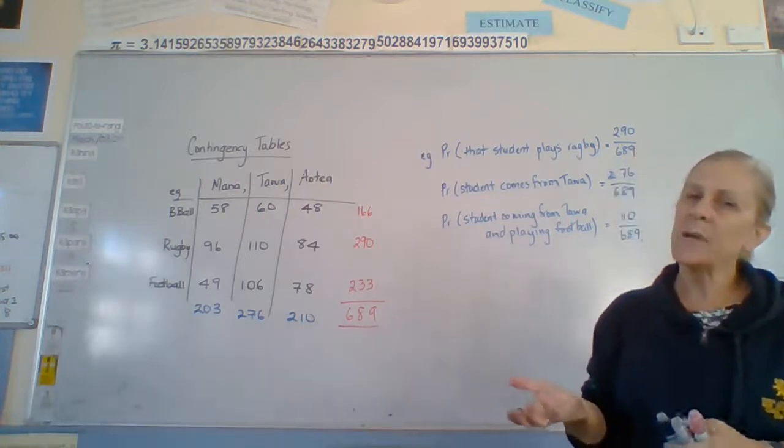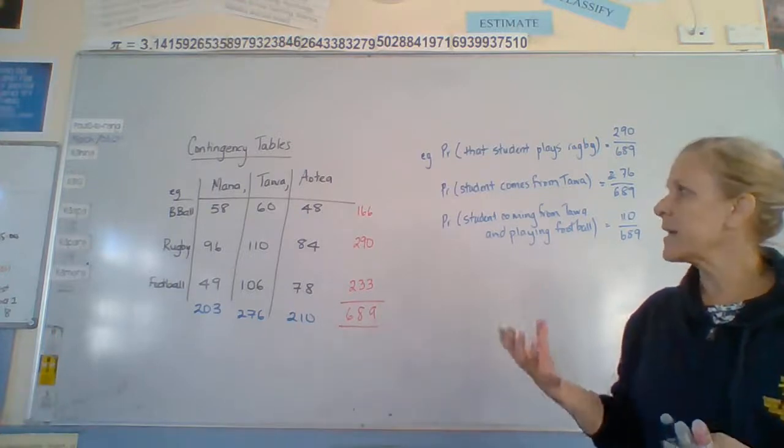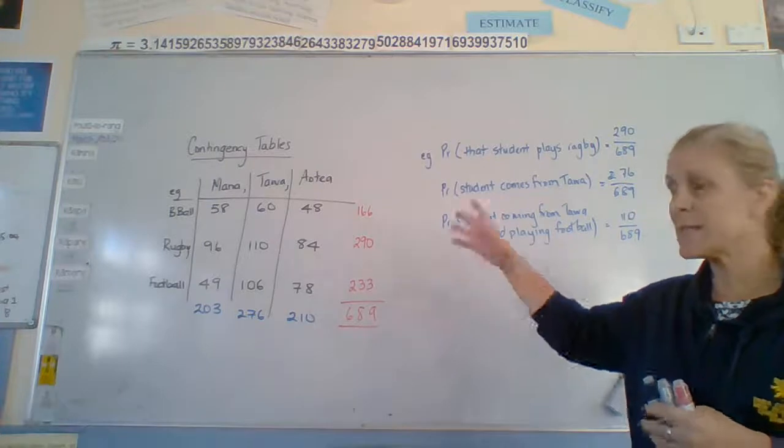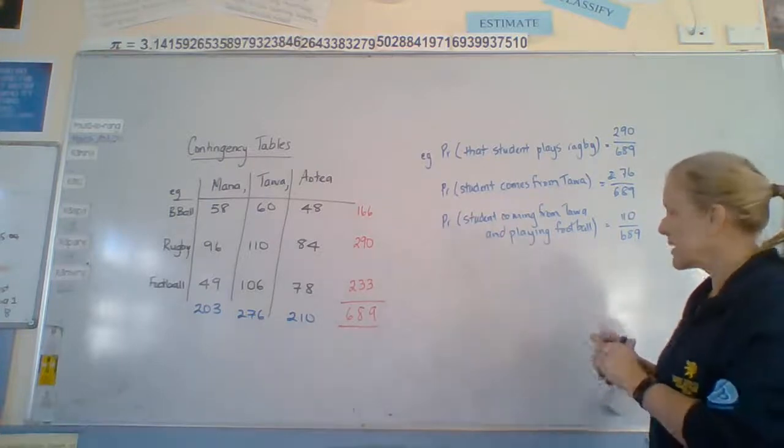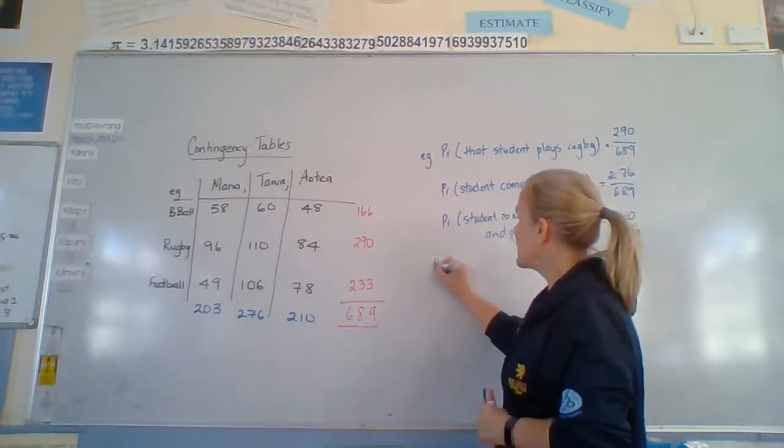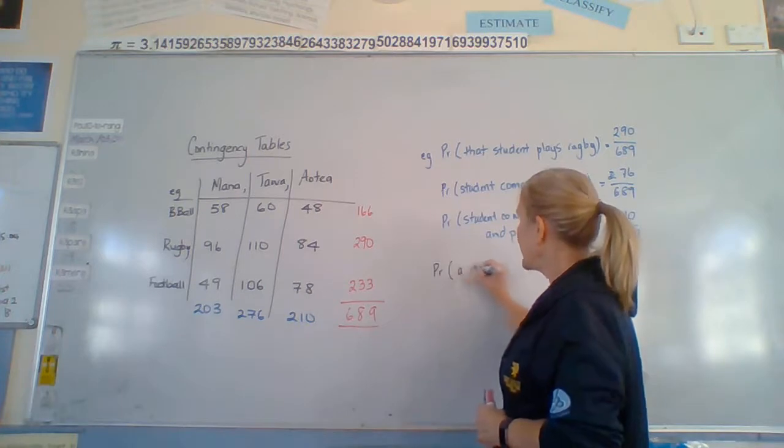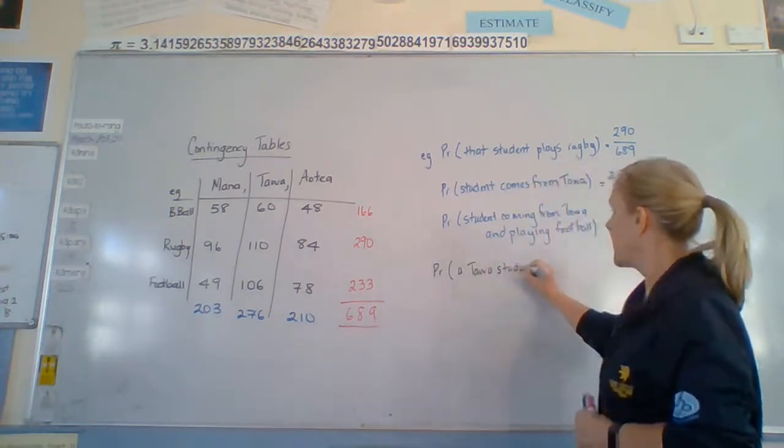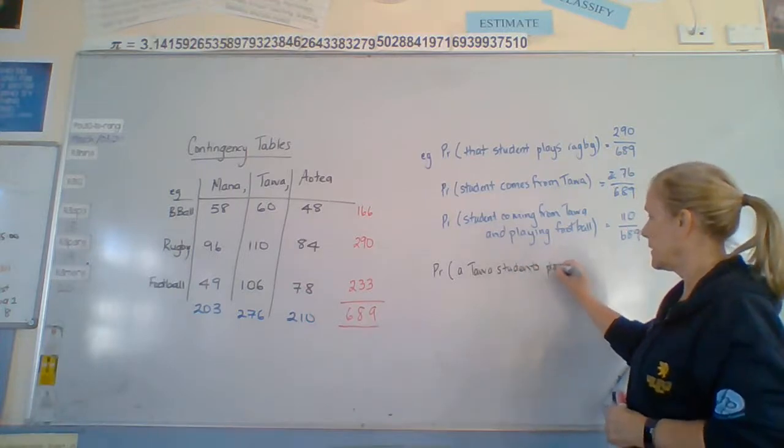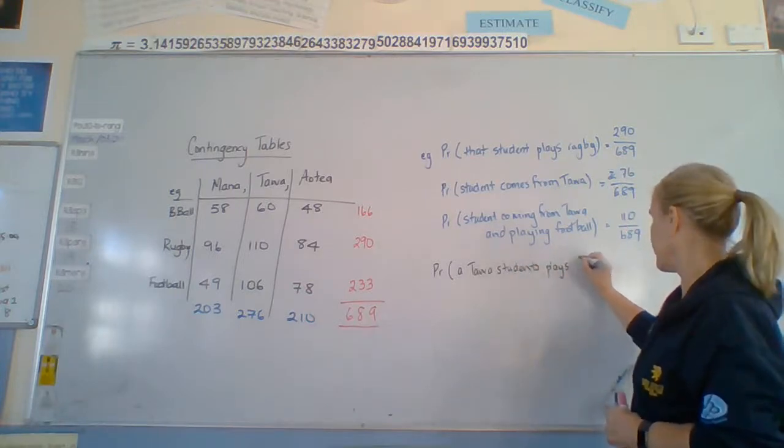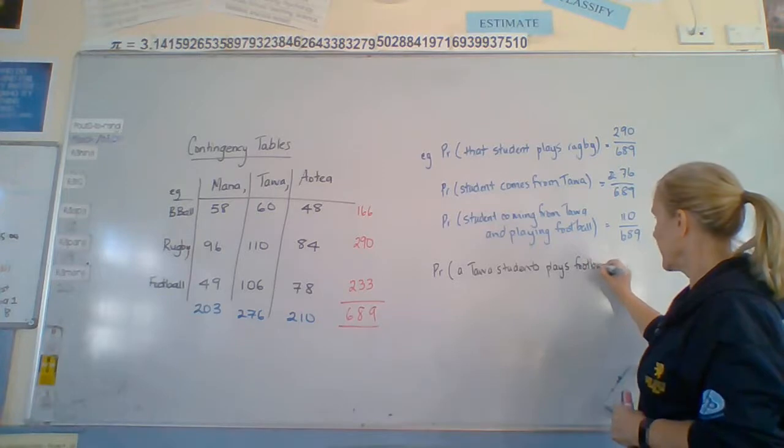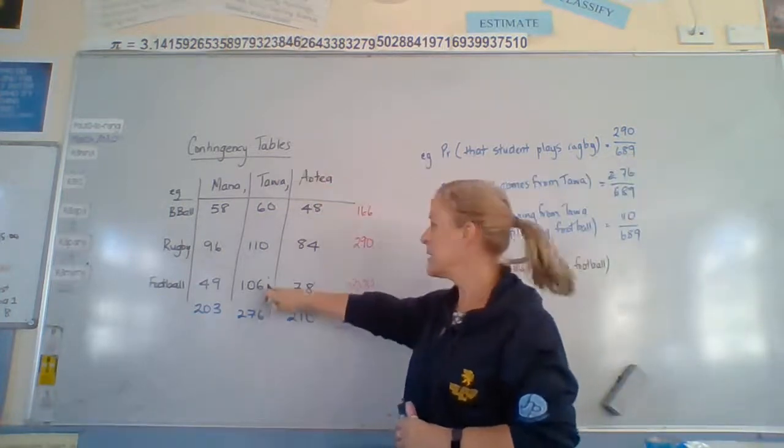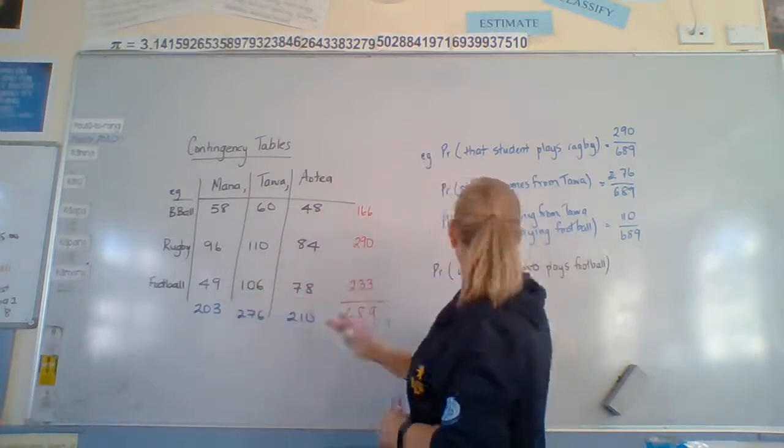What happens now is we get the situation of them saying, well actually we already know something. What's the probability of this? It's just the same table. So an example of this would be, what's the probability that a Tawa student plays football? Alright, so now we're only interested in the Tawa column here. So football, 106.